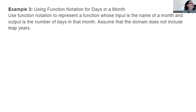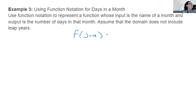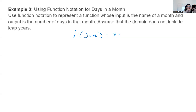Using function notation for days in a month: use function notation to represent a function whose input is the name of the month and output is the number of days. Assume no leap years. I was born in June, so let's use that. The function of June equals 30, because there are 30 days in June. For each month — January through December, excluding leap year — each would have their own number of days.